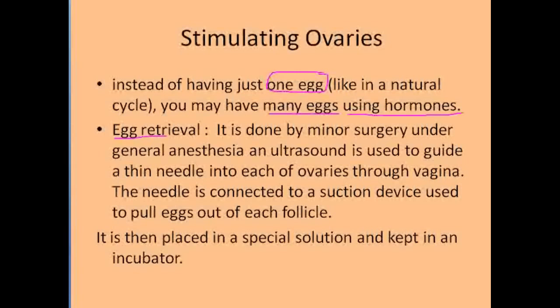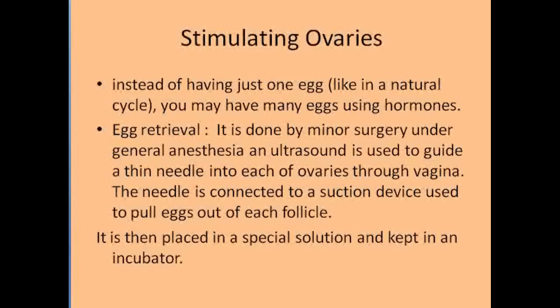Next, we go for egg retrieval. For this process, first we give general anesthesia to the female. Then a thin needle is inserted into each ovary through the vagina, and these needles are guided by ultrasound. This is a minor surgery. Inside the needle there is a suction device, which is used to pull eggs out of each follicle.